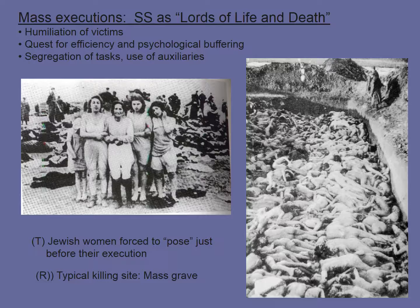Here you see Ukrainian Jews being shot by members of the Einsatzgruppen — mobile killing units — showing how these mass executions were carried out, very face-to-face and personal. You also see another example of mass graves as well as the humiliation of victims and attempts to dehumanize them — women being photographed and forced to pose before their execution. The Nazis were trying to buffer their troops from the psychological nature of this mass killing: they humiliated the victims, dehumanized them, segregated the people, and used auxiliaries, rotating people in the mass killing to prevent the psychological degradation of those forced to carry these acts out.